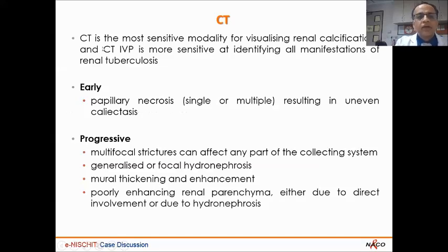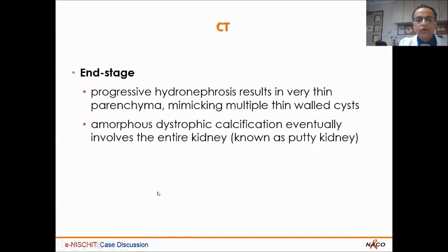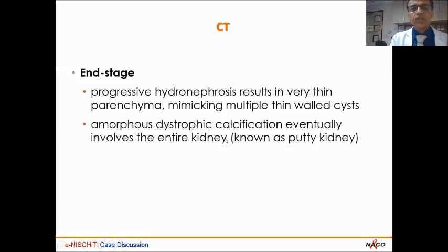CT has become very popular. It is the most sensitive modality for visualising renal calcifications, and CT-IVP is most sensitive for identifying all manifestations of renal tuberculosis. If you want one test after ultrasound, do a CT. Early on, you can see papillary necrosis, single or multiple, resulting in uneven calycectasis. Progressive disease shows multifocal strictures, generalised or focal hydronephrosis, neural thickening and enhancement, and poorly enhancing renal parenchyma. End-stage shows progressive hydronephrosis, back-pressure renal damage, parenchymal thinning forming multiple thin-walled cysts, and amorphous dystrophic calcification eventually involving the entire kidney — the putty kidney.